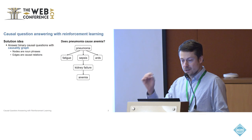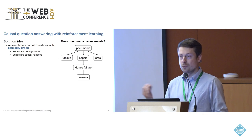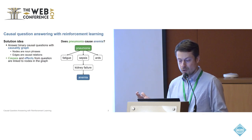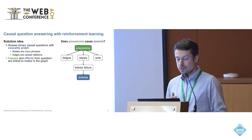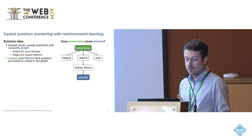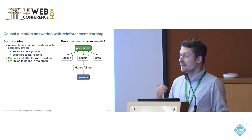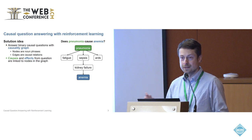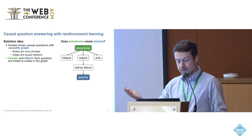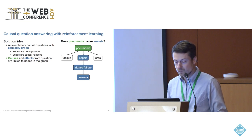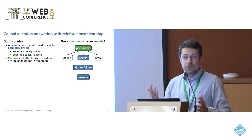To answer a causal question, we link the causes in the question to noun phrases in the graph, and the effects in the question also to noun phrases in the graph, as shown in the example on the right-hand side. Then our main task is to search for paths from the source to the target. Once we find such a path, we can say yes — there is a causal relationship.